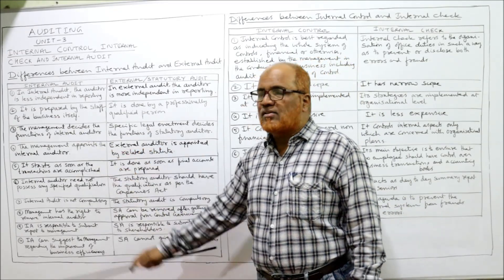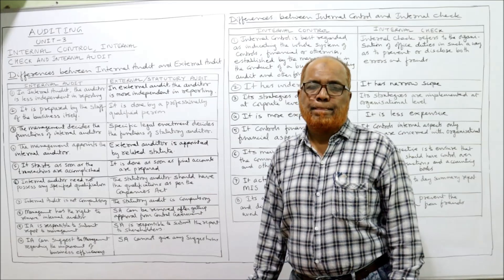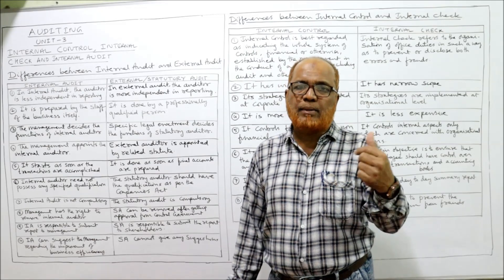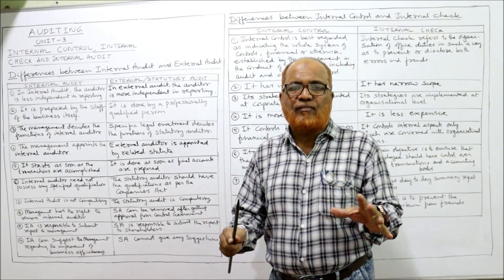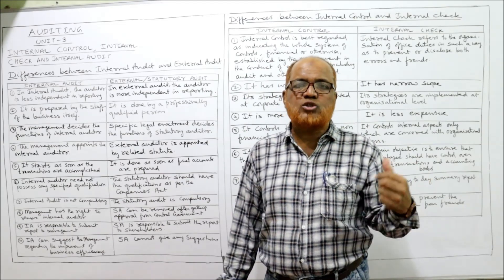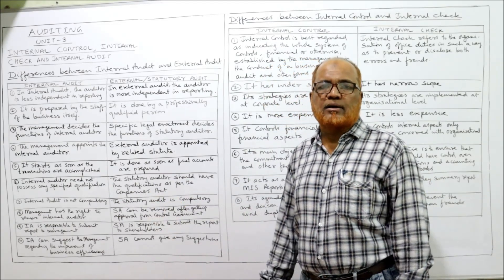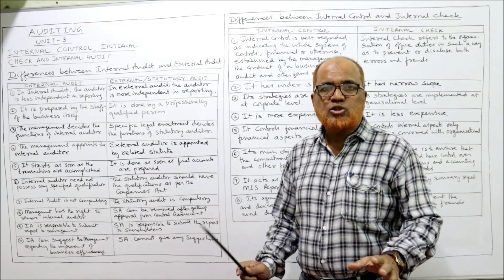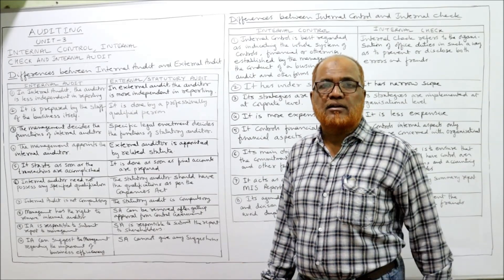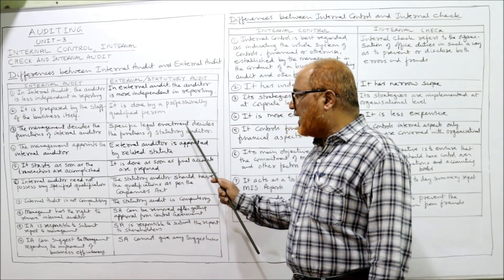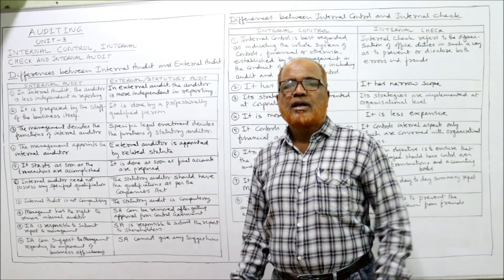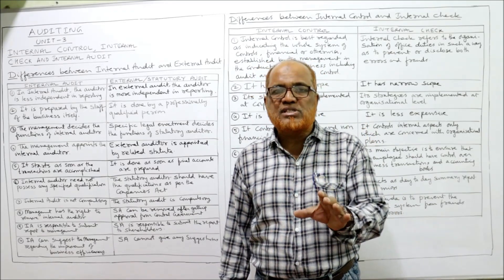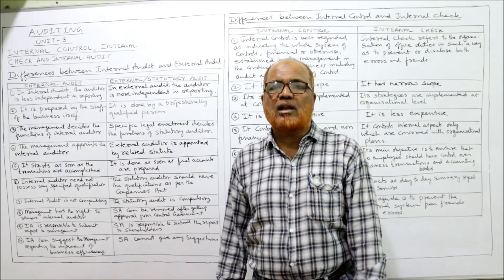Third difference: scope of functions. The management decides the functions and scope of work of the internal auditor. But for the external auditor, the functions are decided by the statute — by the law. Management cannot dictate the external auditor regarding scope. A specific legal enactment decides the functions of the statutory auditor; in India, for example, the Companies Act 2013 specifies the functions of the external auditor.